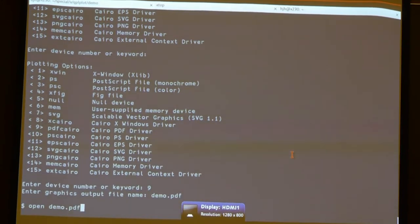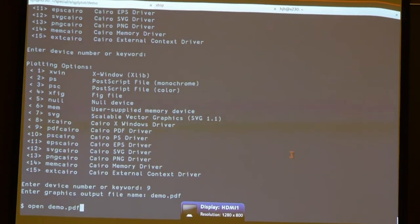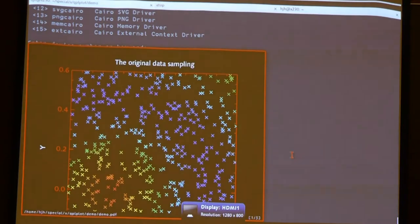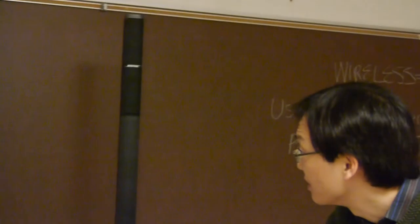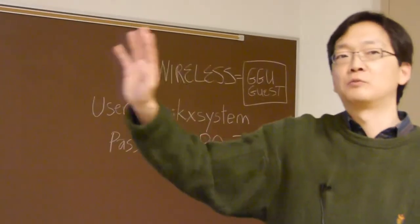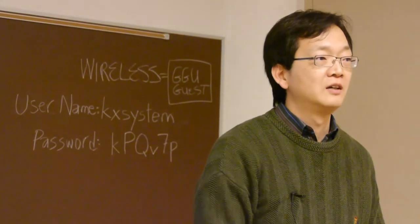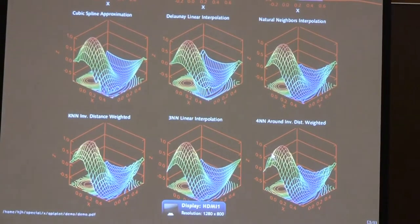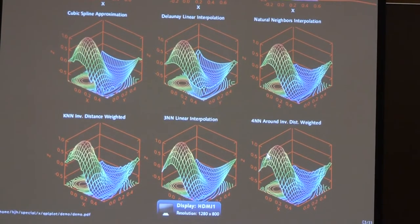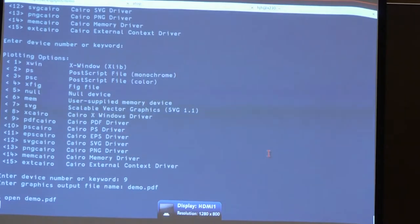This is what you'd get as a PDF file. This shows the data, the colors, the magnitudes on the z-axis — you're looking at the x and y. You can smudge it with whatever interpolation algorithms you have to see the shades around there. You can see different 3D styles. Let me quit this PDF.